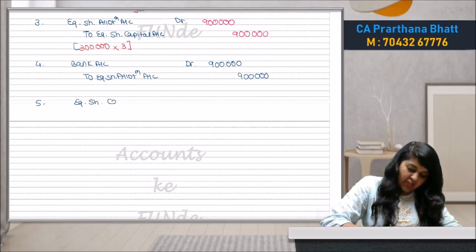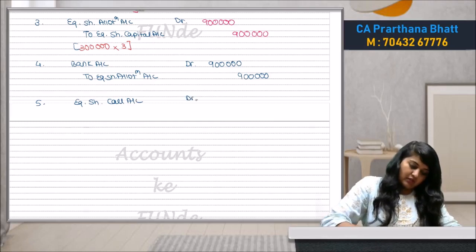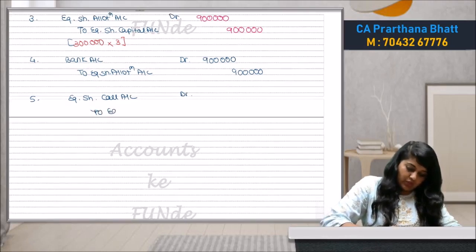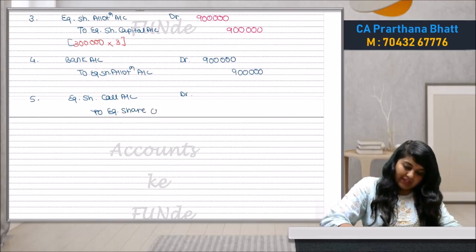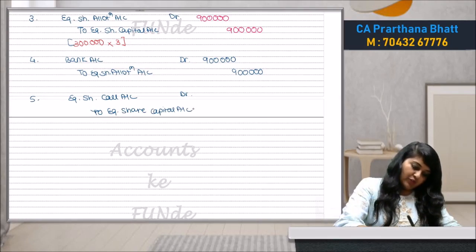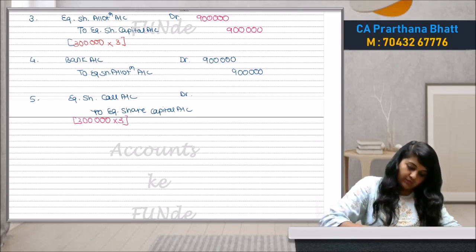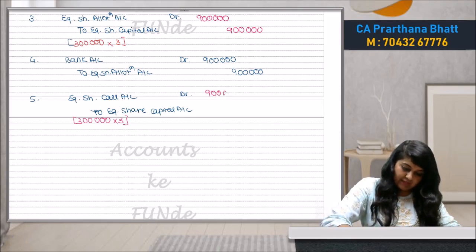Final call due entry: Equity Share Call Account debit to Equity Share Capital Account. Amount: 3,00,000 shares × ₹3 = ₹9,00,000.